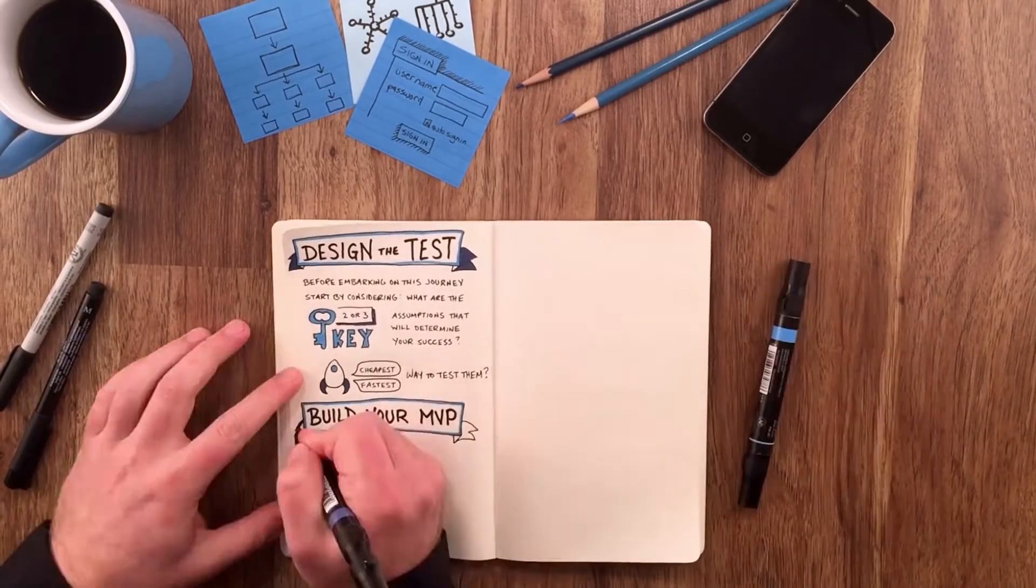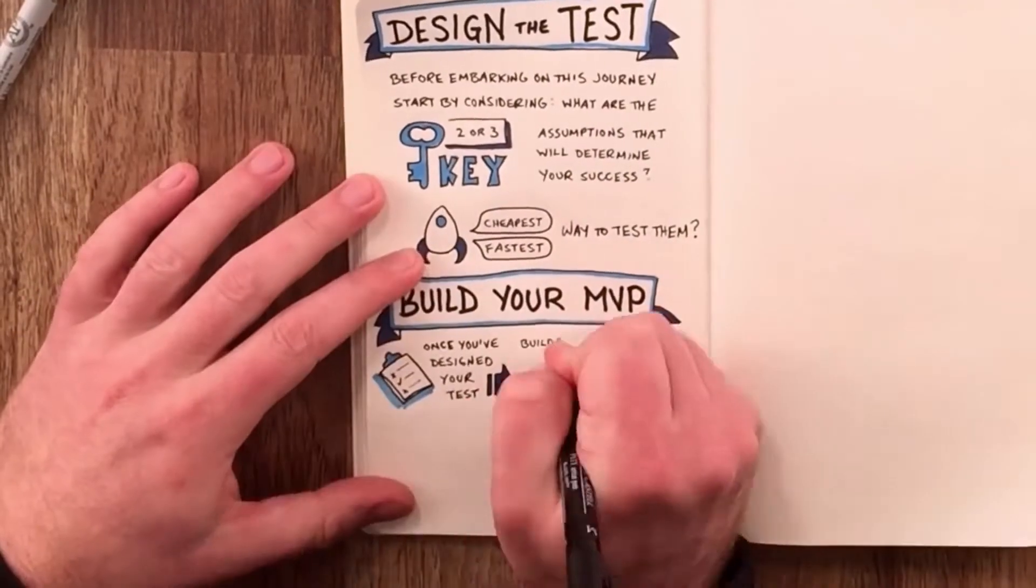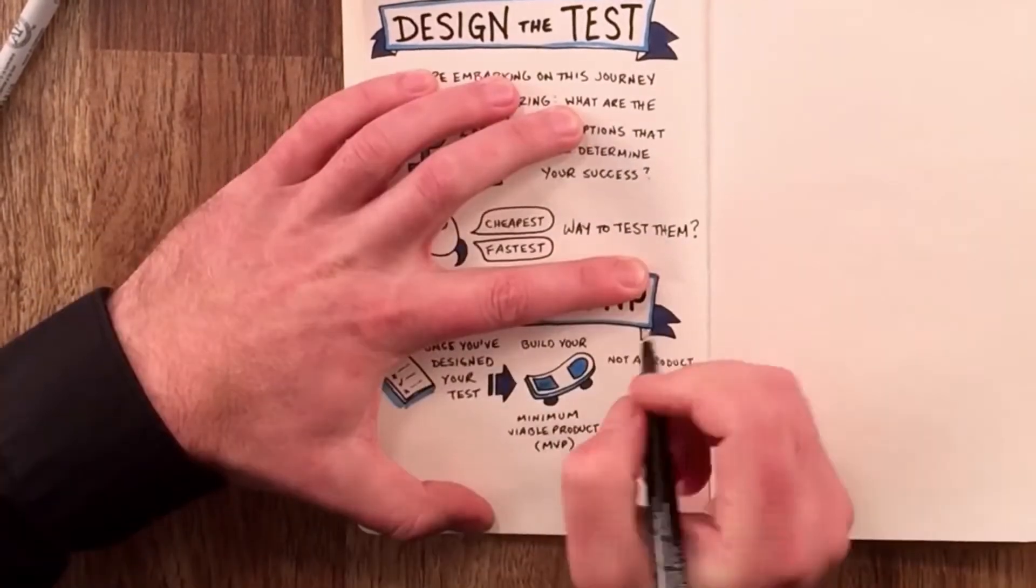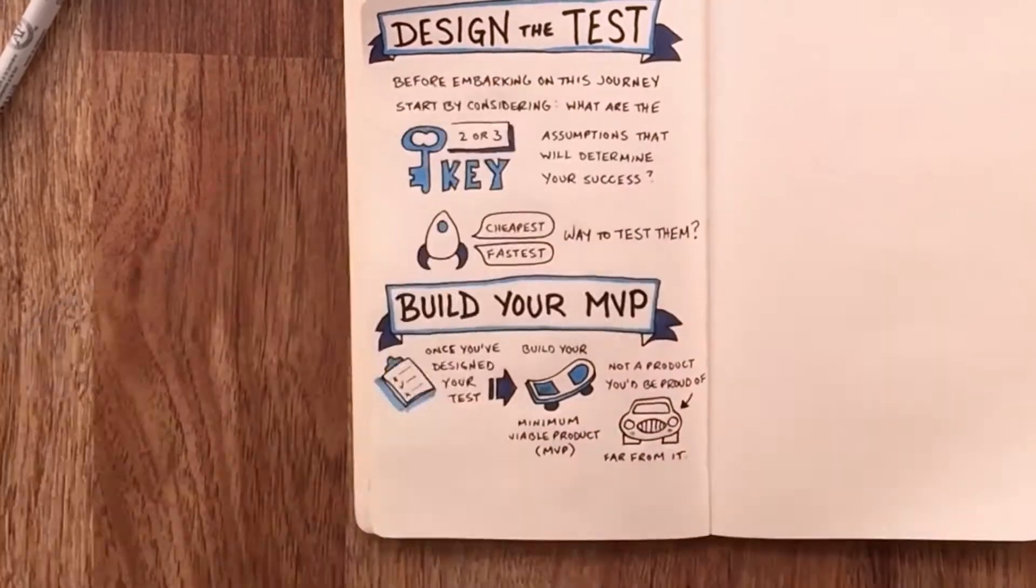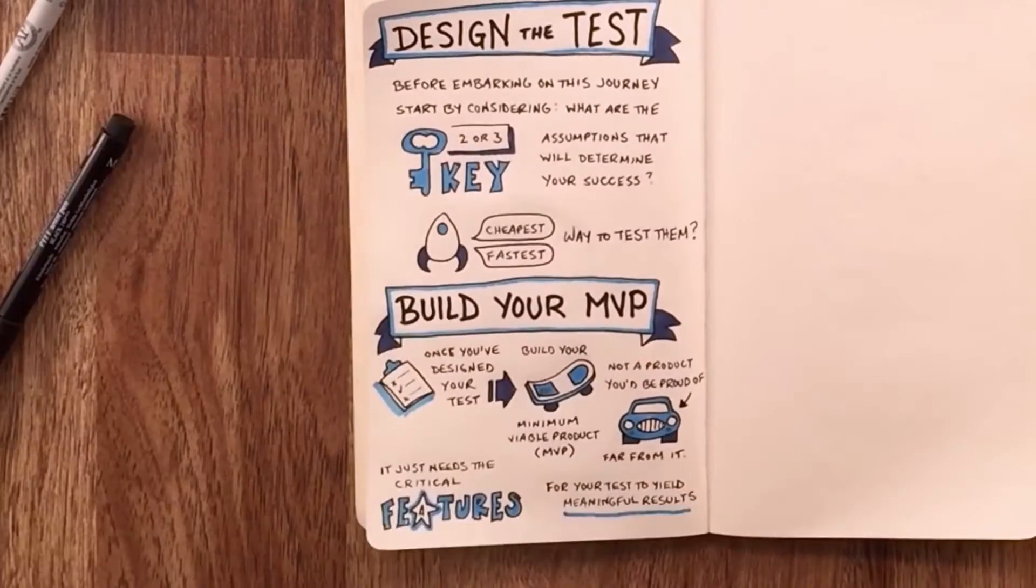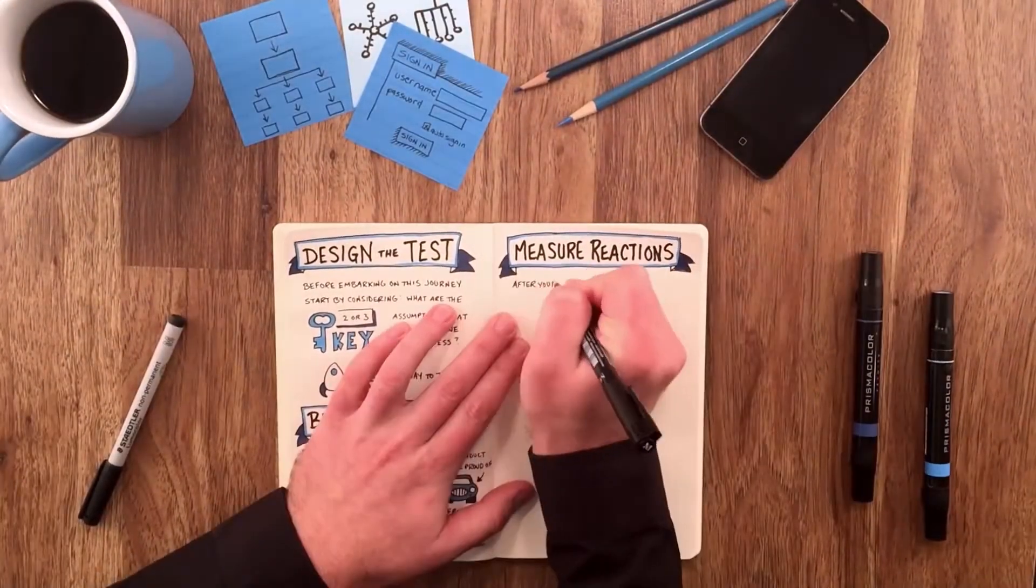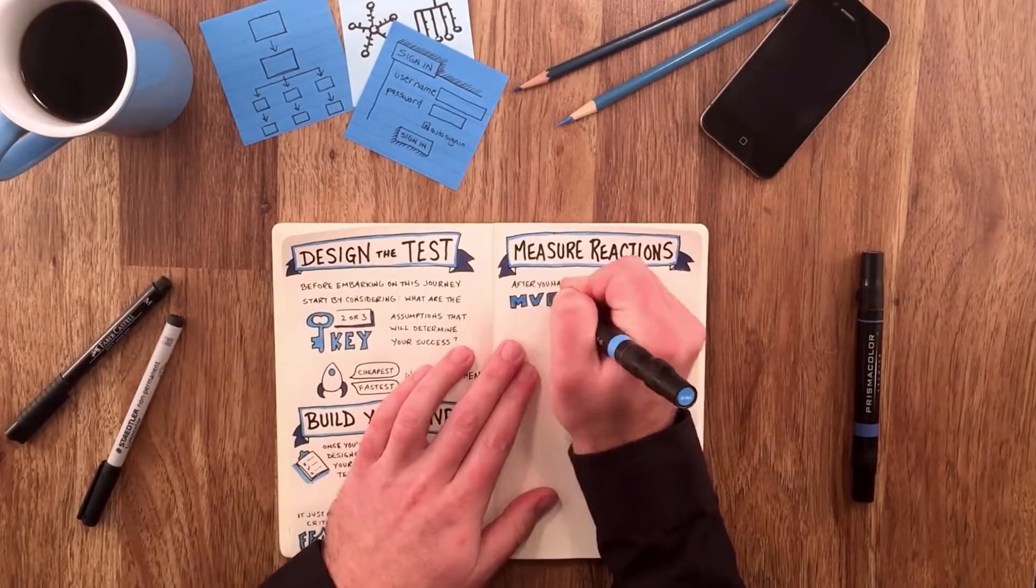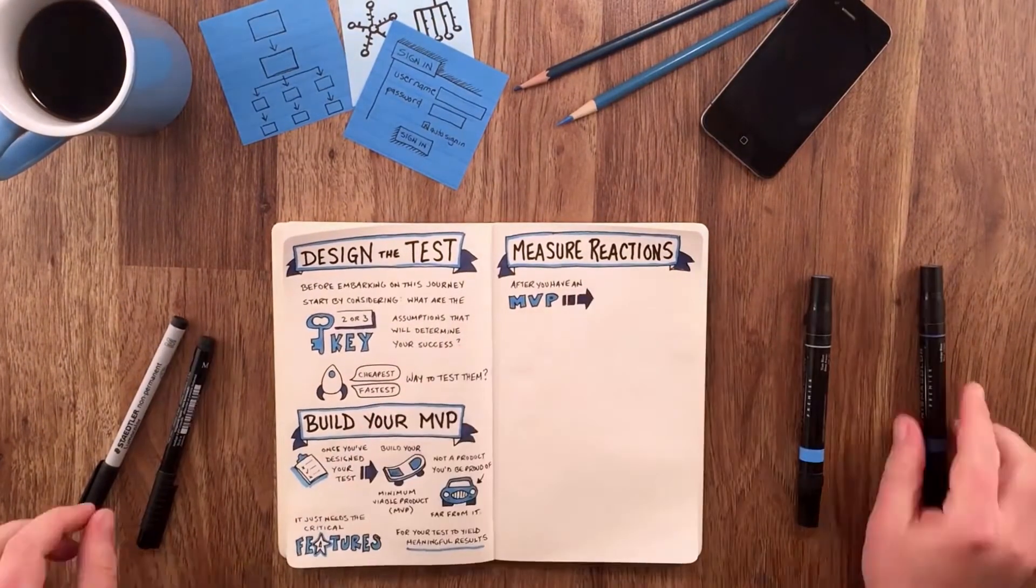Once you've designed your test, build your Minimum Viable Product, or MVP. That's not a product you'd be proud of—far from it. It just needs the critical features for your test to yield meaningful results. The singular role of the MVP is to play its part in your test.